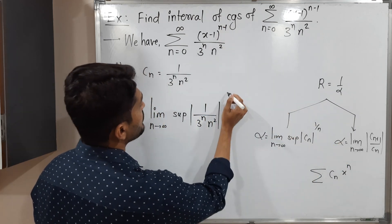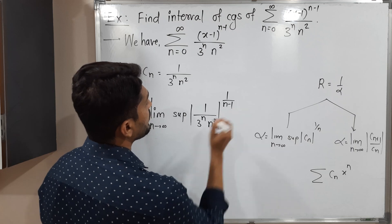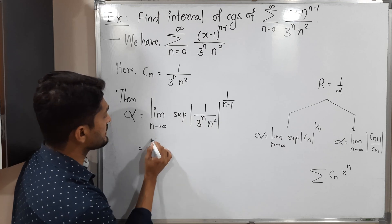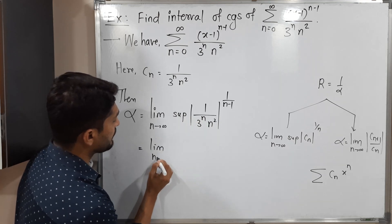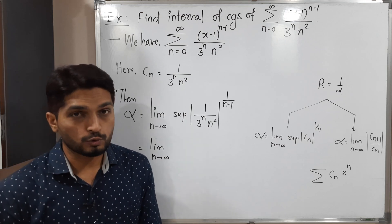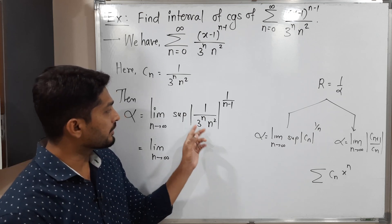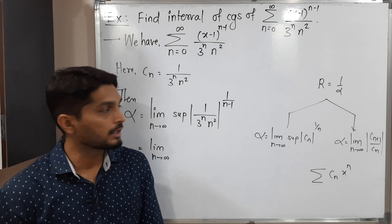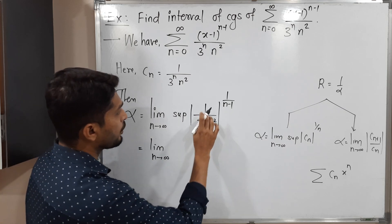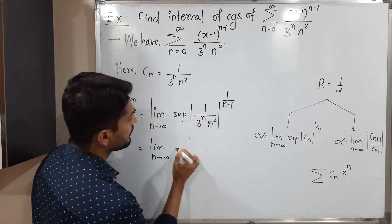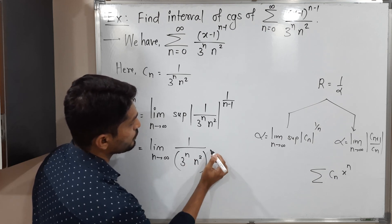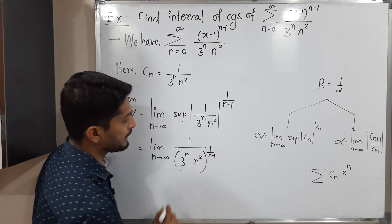Since the power is n minus 1 rather than the standard n, instead of taking the 1/n root I should write 1/(n minus 1). There is no need for the mod sign since 3 raised to any natural number and n squared are obviously positive. So 1 raised to anything is 1, giving us 1 over (3^n · n²) all raised to 1/(n minus 1).